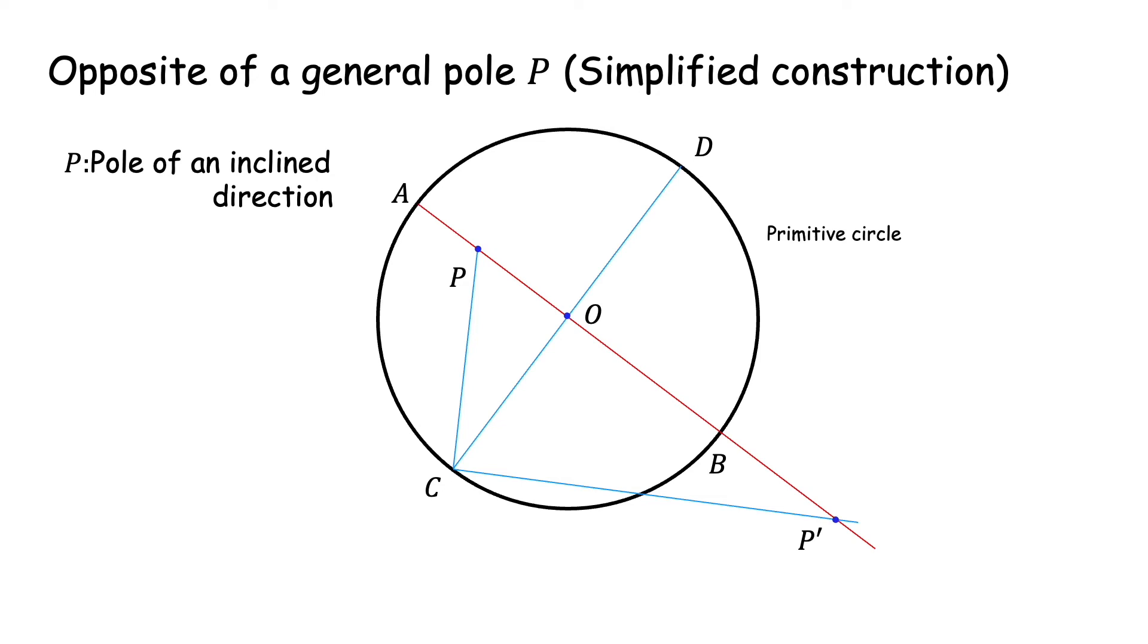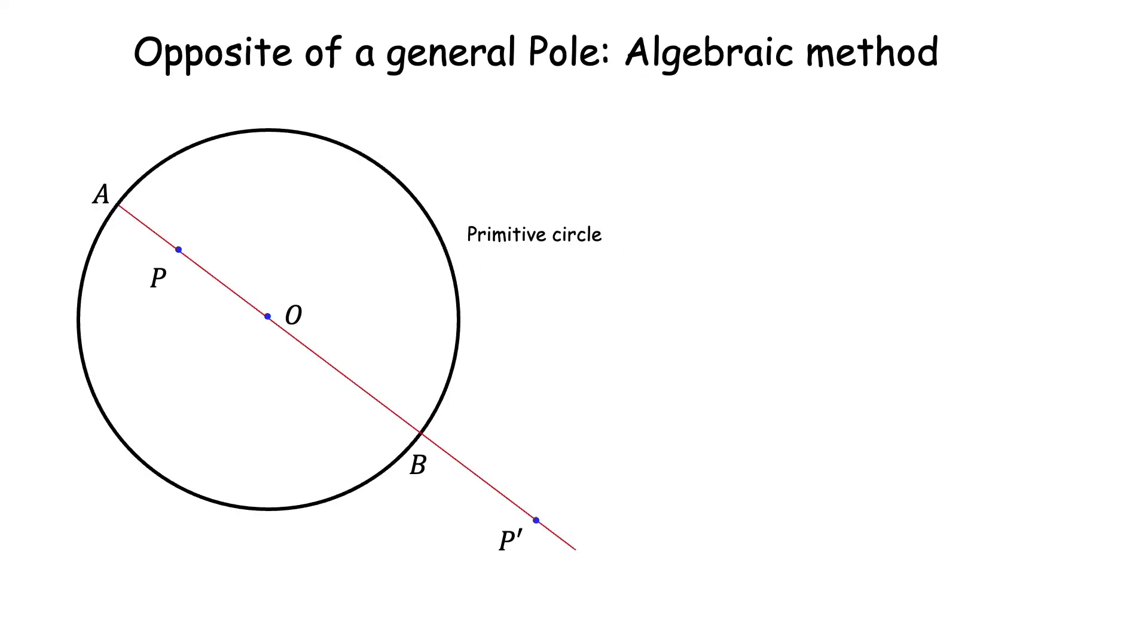We can also find P' by an algebraic method using our familiar distance angle relation. If we measure the distance OP, let us say that is X. Then, we can find the angle of inclination of P with respect to the vertical, let us call that theta and we know the relation X is equal to R tan theta by 2 where R is the radius of the primitive. We can easily find theta by inverting this relation and so we know the angle of inclination of P from O.